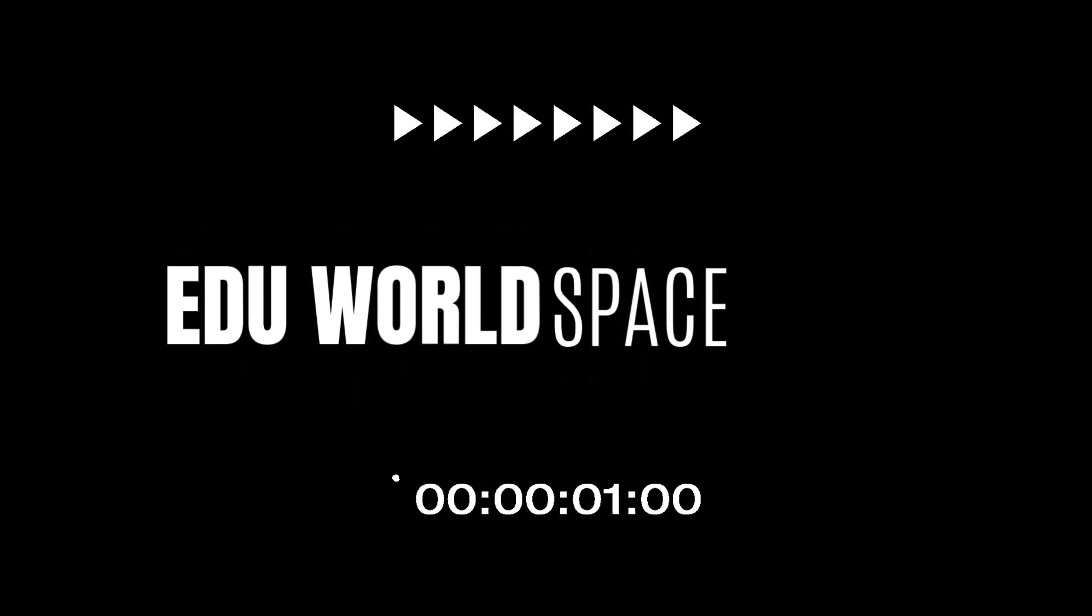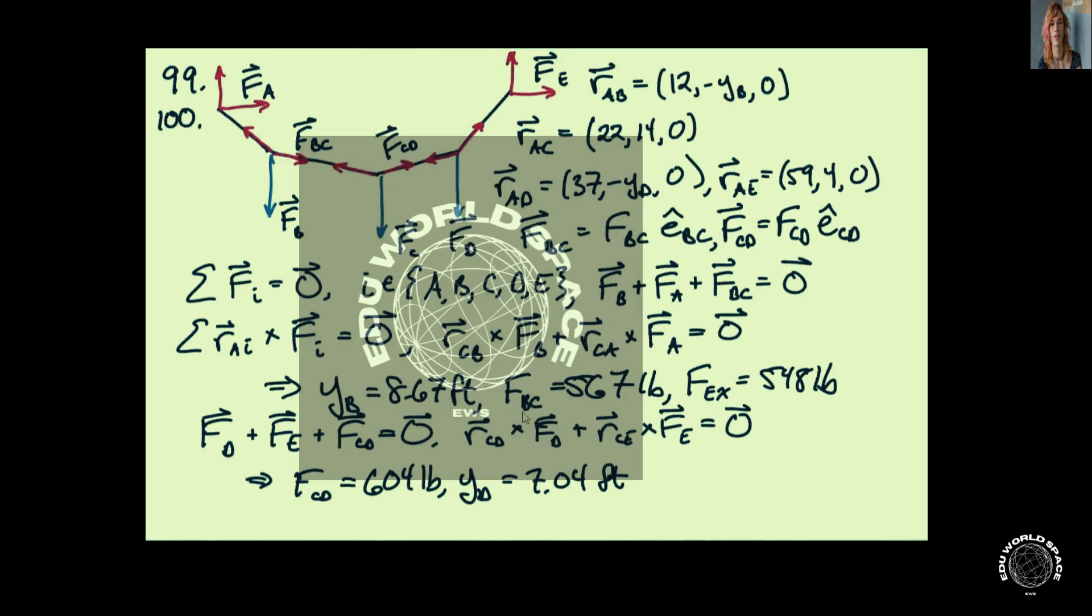Welcome to EDU WorldSpace. In Problems 99 and 100, we have a cable or ropes attached to one another through rings, and we have four segments.